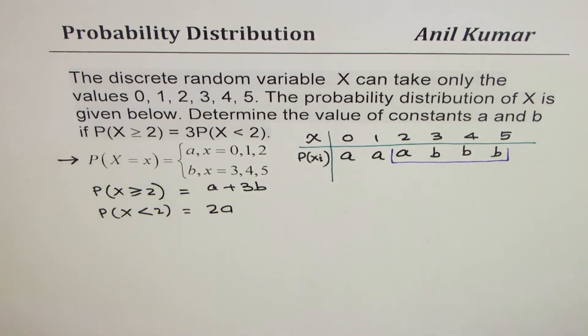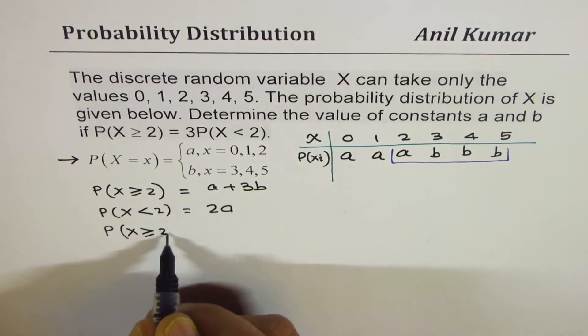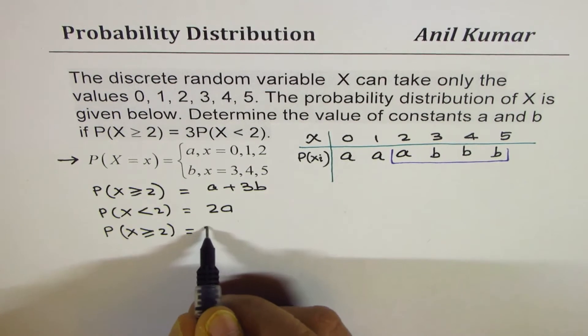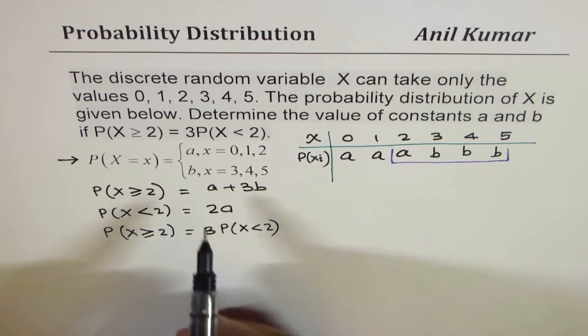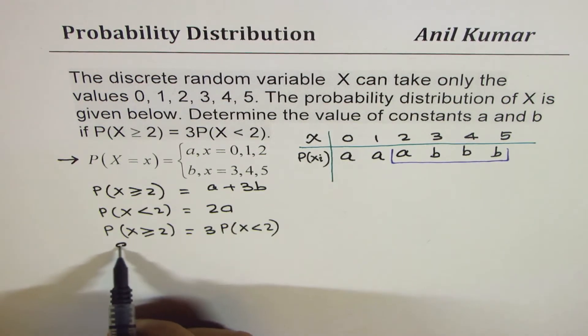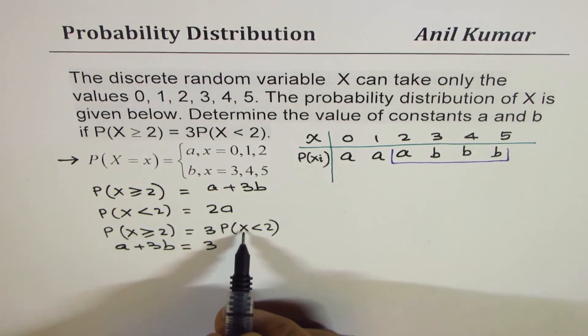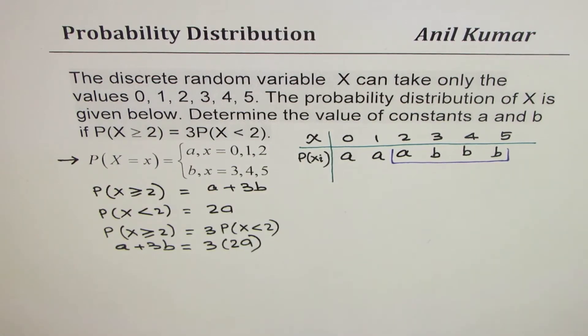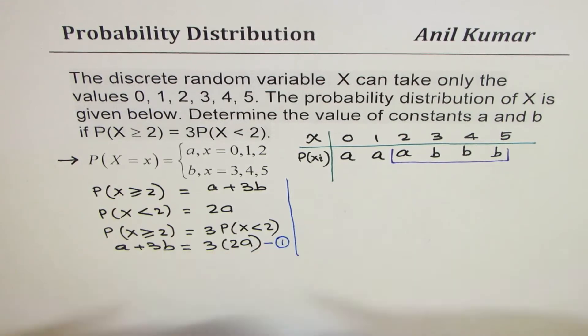We are given here a condition that probability for X ≥ 2 is equal to 3 times the probability of X < 2, which is 2a. So you get one equation here. So we get one equation which is this. Let me call this as equation 1.